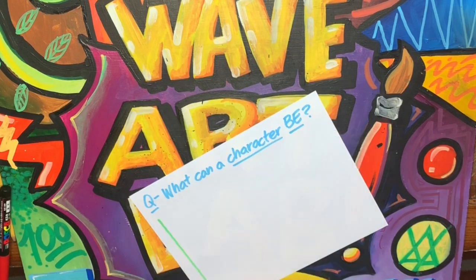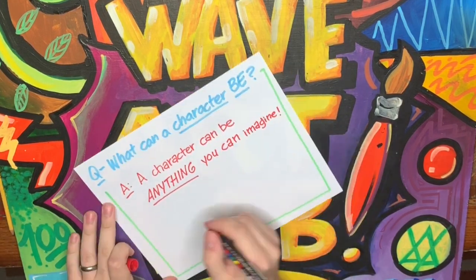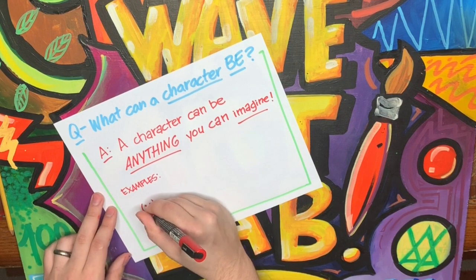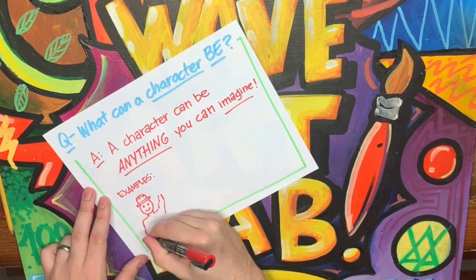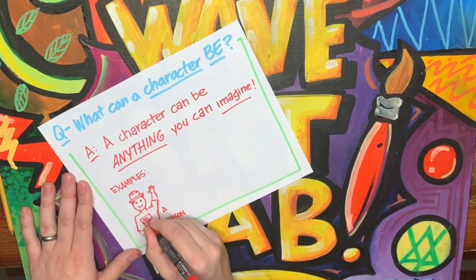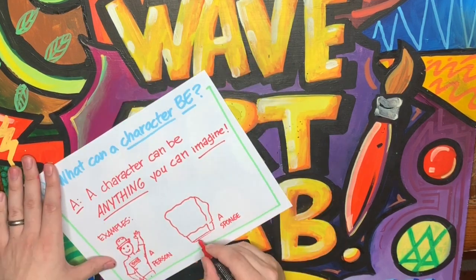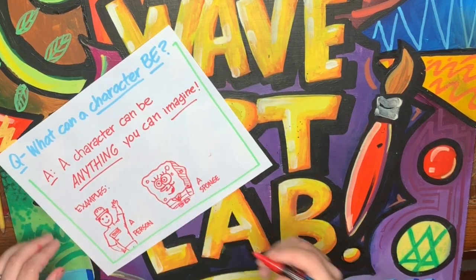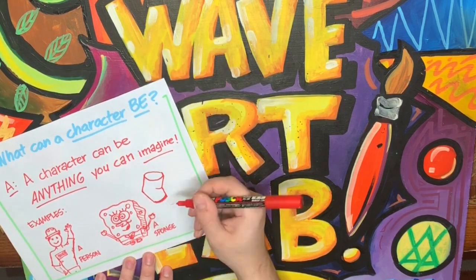A character can be anything you can imagine. For example, it could be a person named Bob, it could be a sponge also named Bob, or it could be a bent tin can. We can call him Fred.